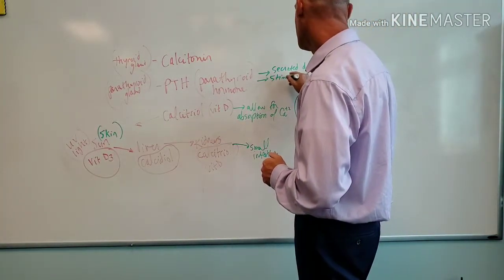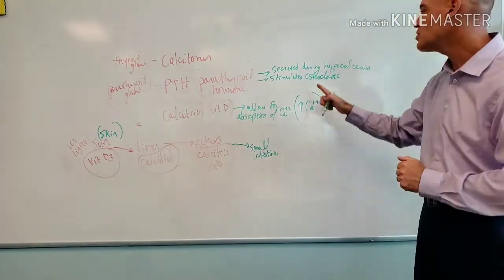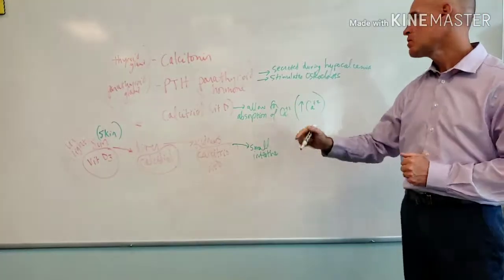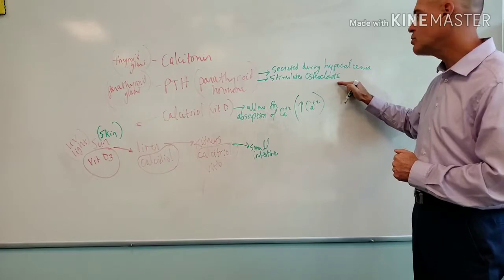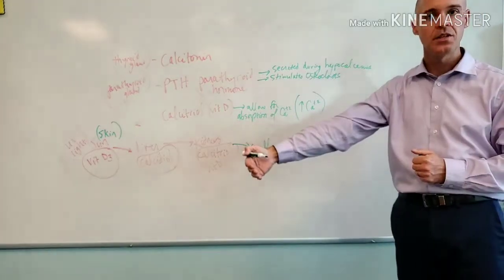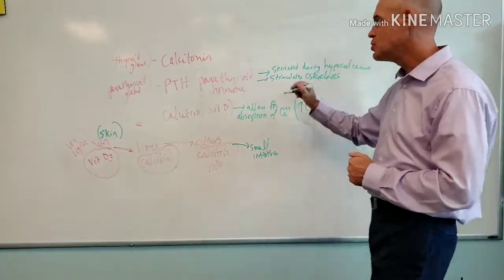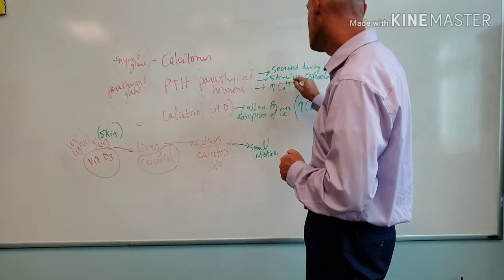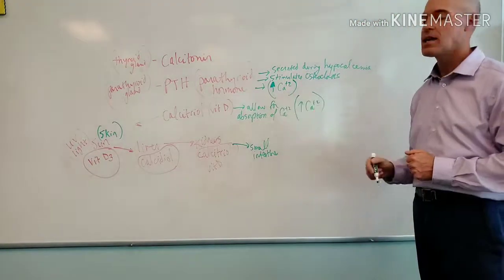What does PTH do? It stimulates osteoclasts. I haven't mentioned osteoclasts before in any videos, but what osteoclasts are are macrophages. They are a type of macrophage that basically eats bone. So their job is to basically reabsorb bone. So what literally the osteoclasts are going to do is they're going to break down bone. That's in a nutshell what they do. They're going to break down bone in order to harvest some calcium. So literally PTH is going to stimulate the breaking down of bone.